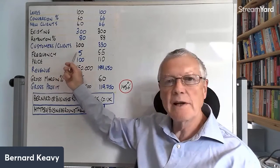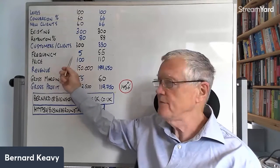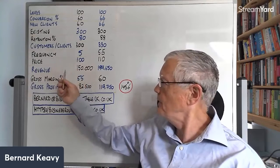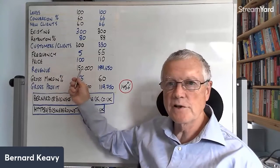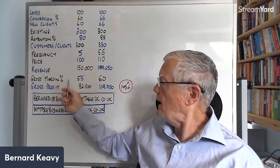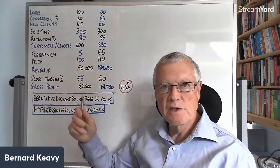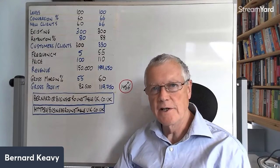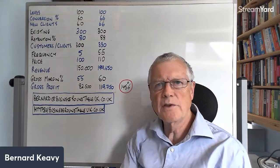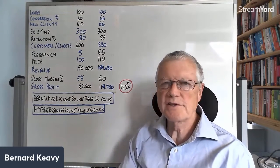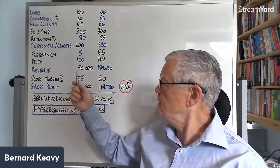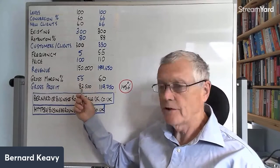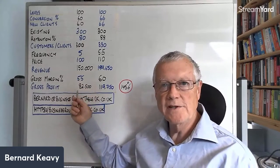And if we know on average they buy five times and spend £100 each time, then our revenue is £150,000. Our gross margin — which is basically how much we make on every item that we sell, whether it's a good or a service — is 55%. So our gross profit would be £82,500.